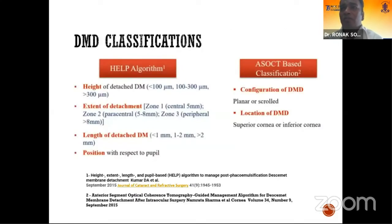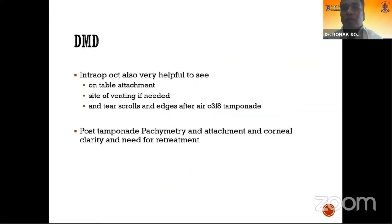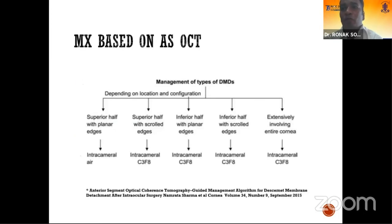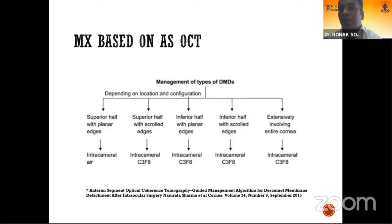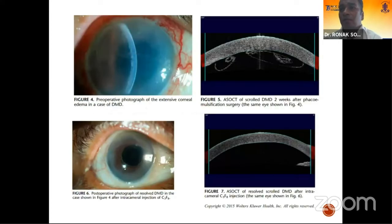For Descemet membrane detachment cases, there are various algorithms and classifications based on OCT. It is important to assess post-tamponade pachymetry and attachment and clarity of the graft. Based on OCT classification, a treatment protocol is established where, depending on the location, the type of tamponade agent is chosen. Pre and post-op pictures can demonstrate treatment outcomes.